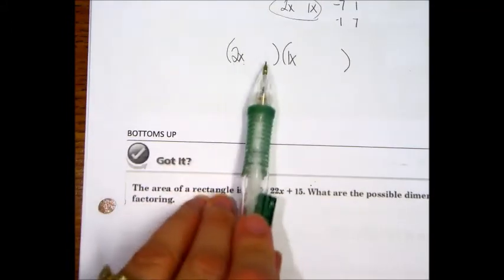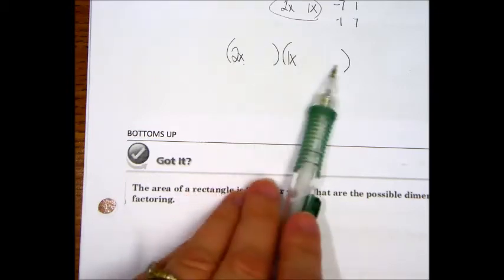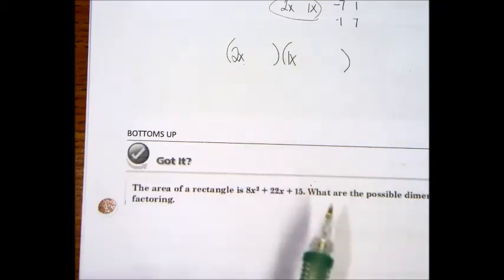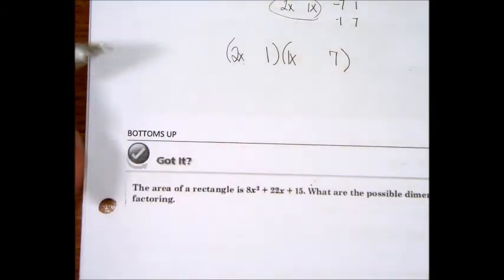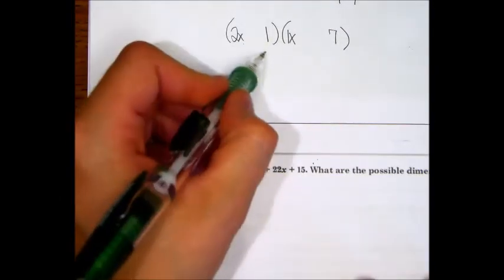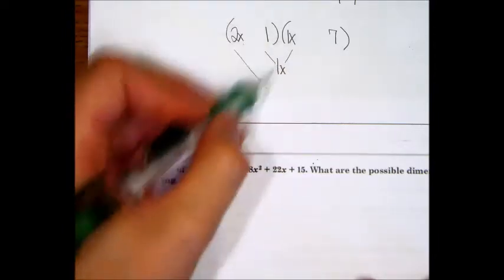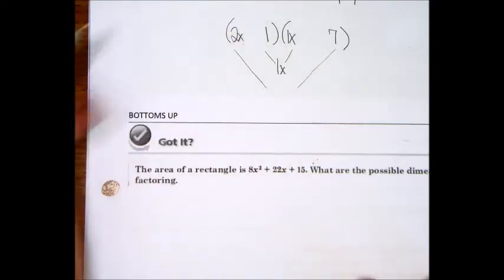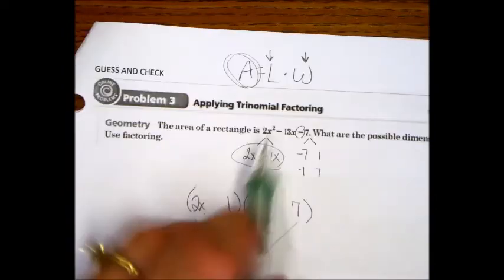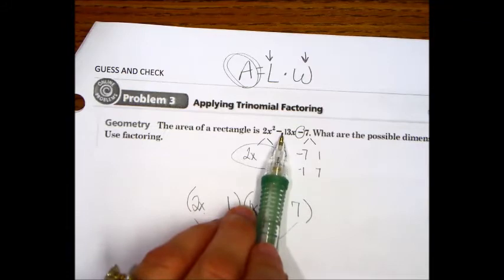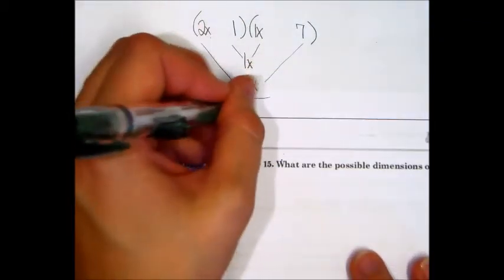Now, here's your choice. We can do 7 and 1 or 1 and 7. We can do 1 and 7. Now, we'll deal with our signs in a second. Let's test it. To test it, you do these two. What's 1 times 1? 1x. And what's these two? 2x and 7. 14x. Now, remember, we do need to get negative 13. Could that work? Can we get a negative 13 from these numbers?